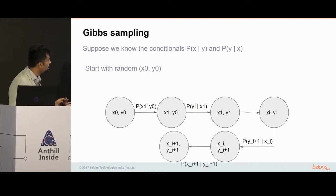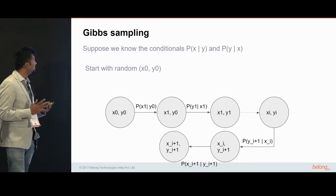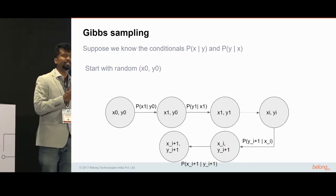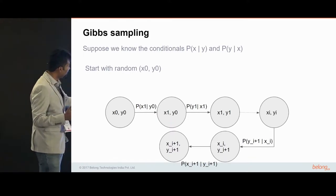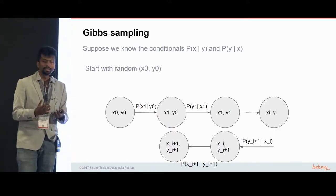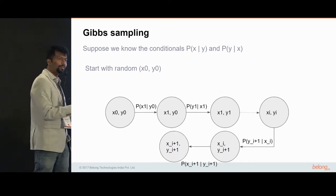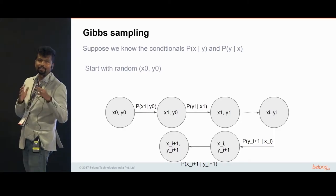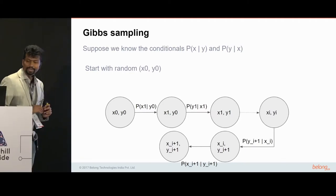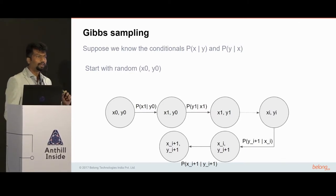Once you start doing this, a few iterations later you will be at (xi, yi). You apply the same thing: get yi+1 with xi from the conditional. What this algorithm guarantees is that after some time — called the burn-in period — the values of xi and yi you get are guaranteed to come from the probability distribution p(x, y). That's the beauty of it. Let's now fit it into the context of the joint probability distribution we saw.